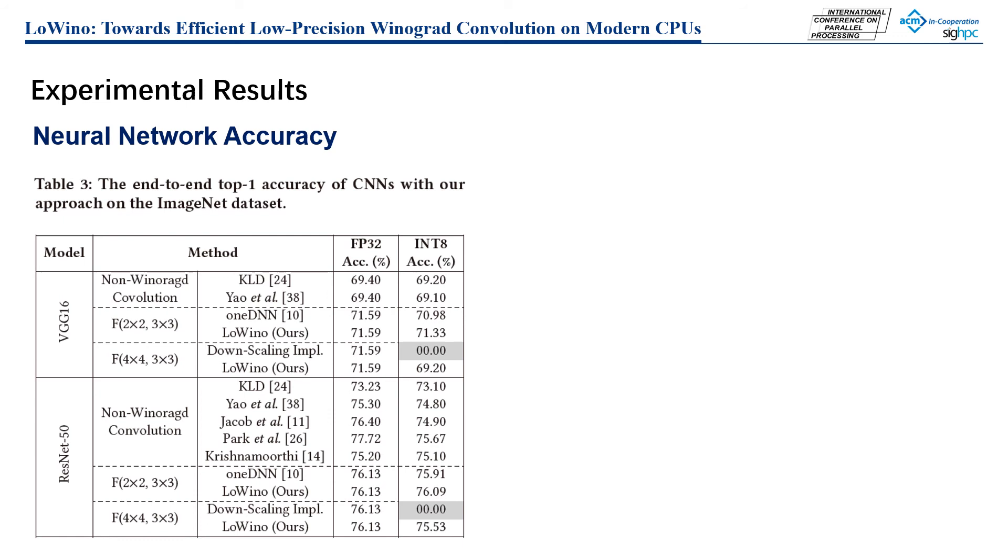Second, benefiting from our quantization design, LoWino achieves less accuracy loss compared with the downscaling approach when M equals 2. Third, the downscaling approach with M equals 4 drops the model accuracy to zero, which is not acceptable.